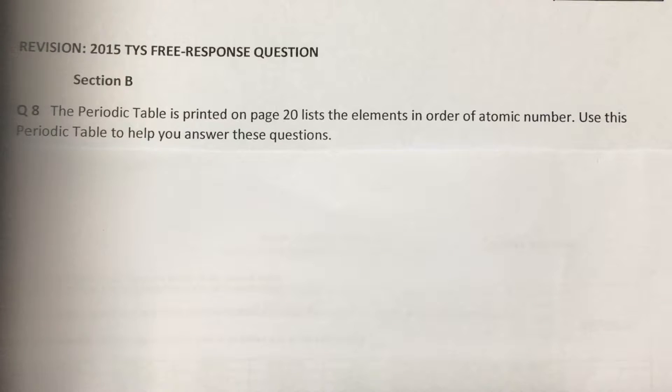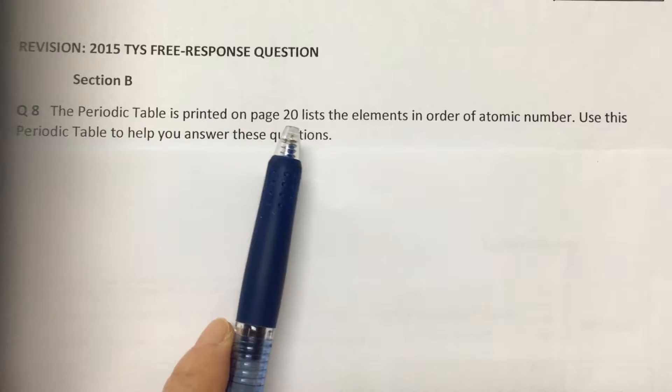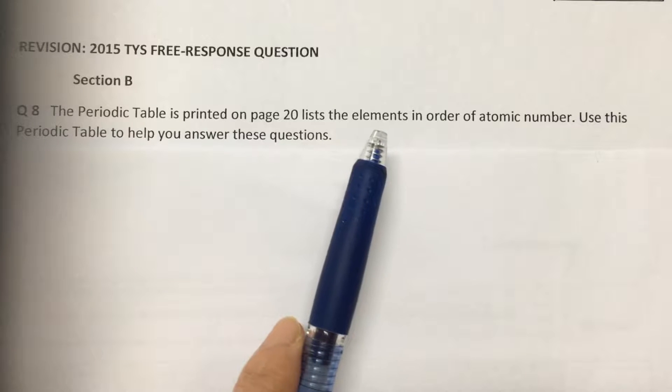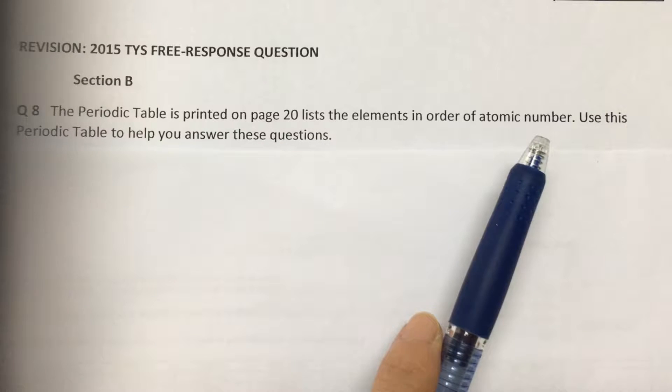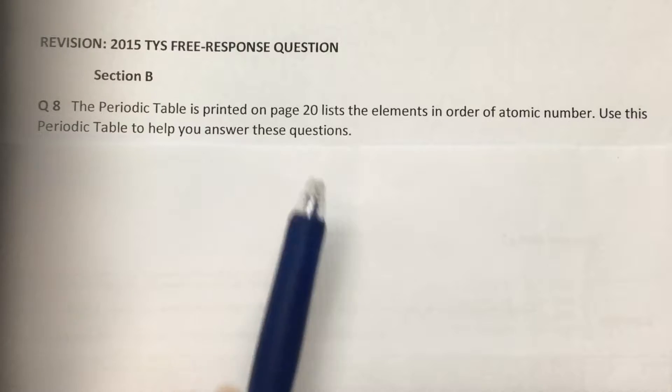2015, Section B, Question 8. The periodic table is printed on page 20. List the elements in order of atomic number. Use this periodic table to help you answer this question.